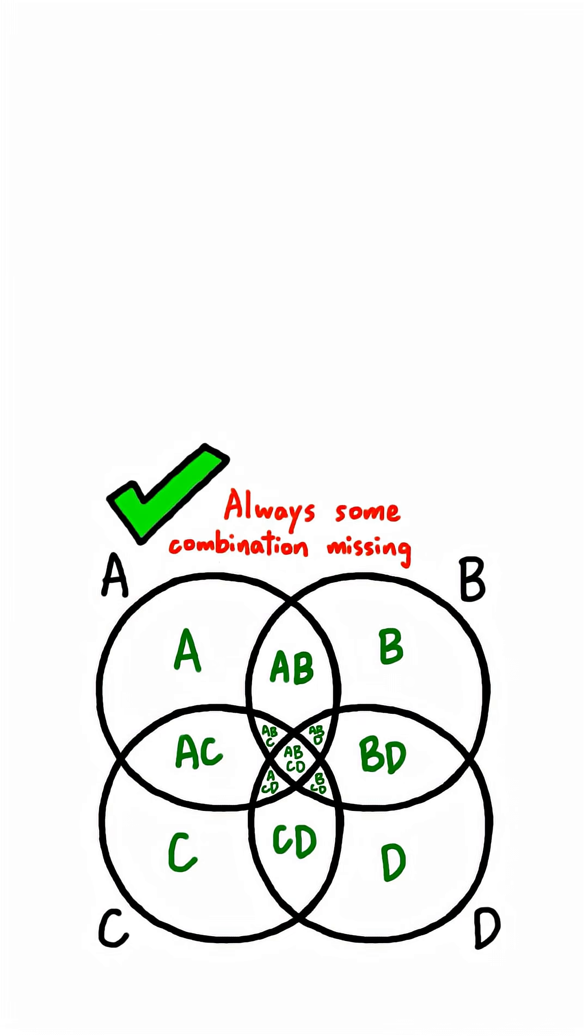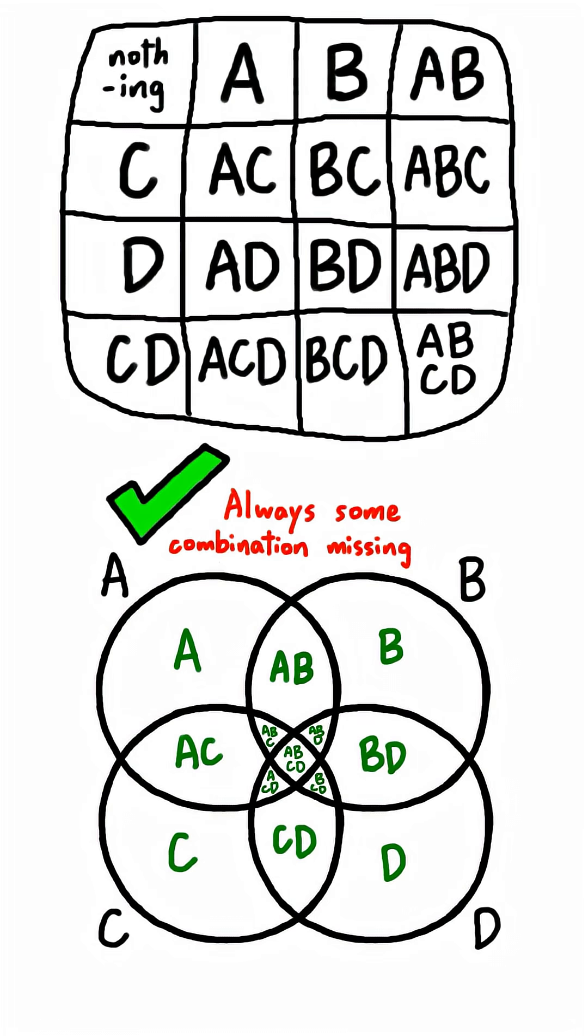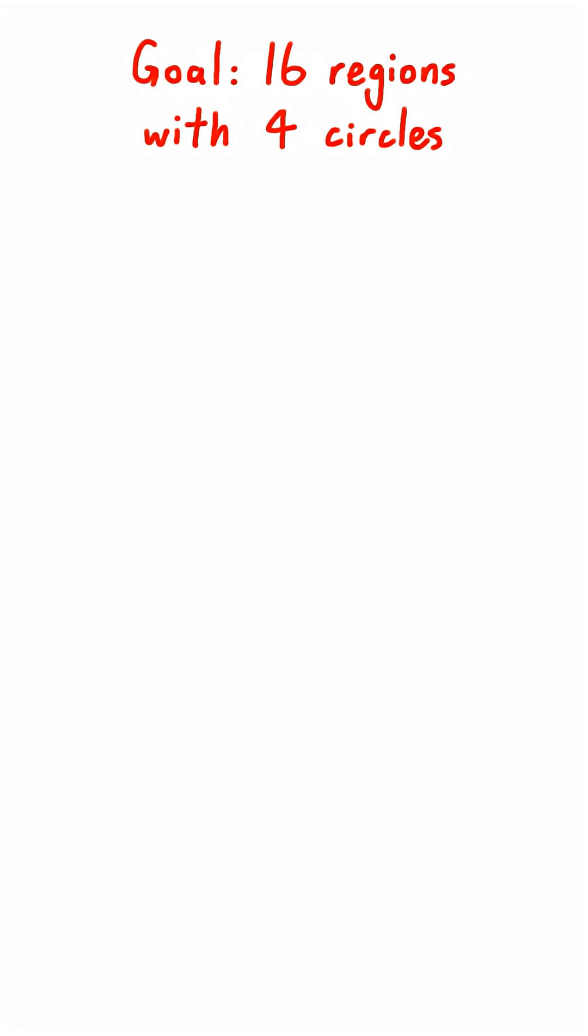The third fact is true. There are 16 different combinations of letters, so we need 16 regions in our Venn diagram to fit them all. But is this possible with four circles? Let's see.